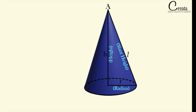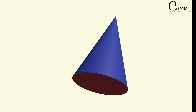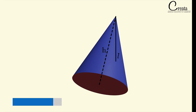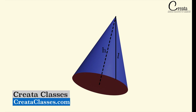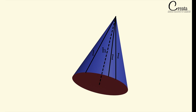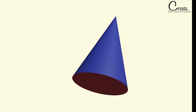If you observe, there is a difference between h and L. H is the height which joins the topmost point with the center of the circle, whereas the slant height L joins from the topmost point with the circumference of the bottom circle. So L, the slant height, will be more as compared to the height h.